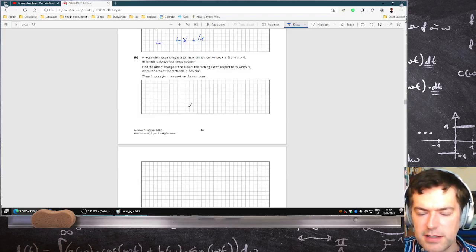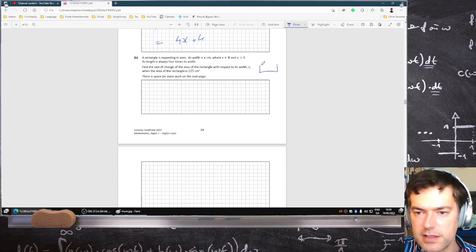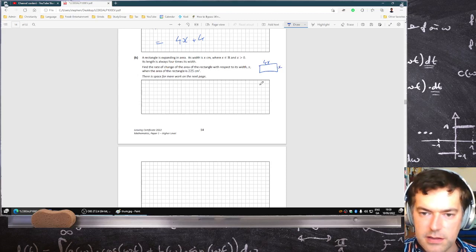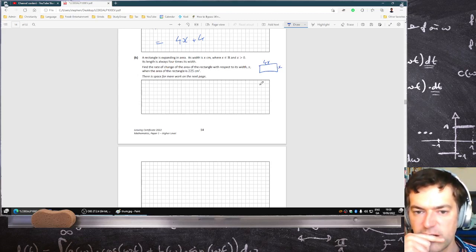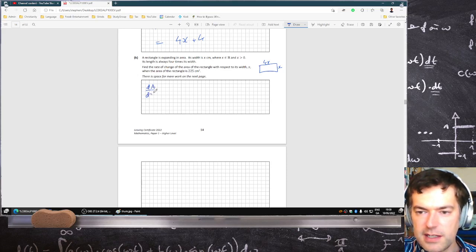A rectangle is expanding in area, its width x, its length is always four times its width, so it's like this. Find the rate of change of the area with respect to its width x, dA dx.